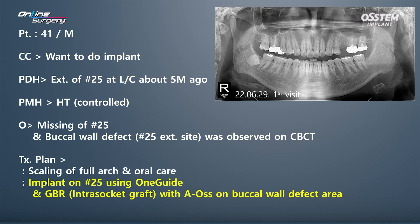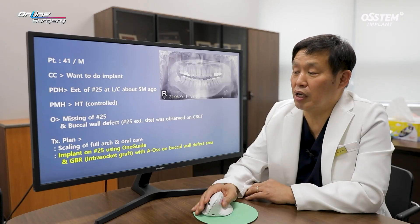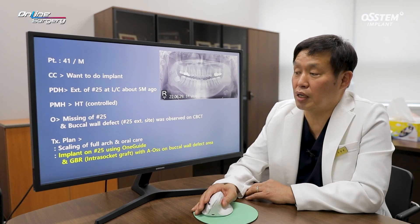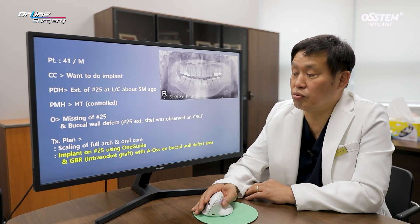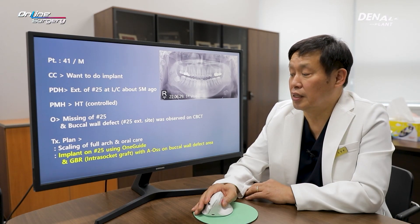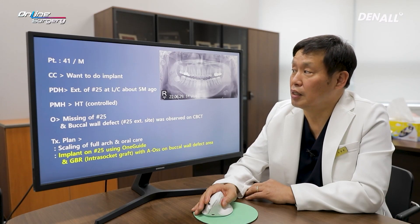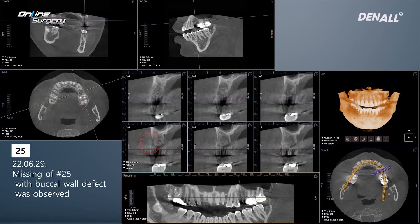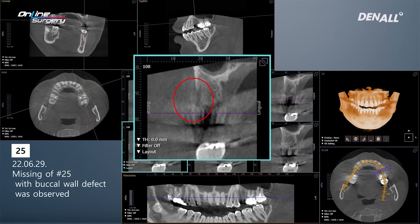When I looked at the CBCT at number 25, there is a buccal wall defect in the extraction socket. I provided overall oral care to the patient. After placing the implant, I planned to do an intra-socket graft. Within the extraction socket, there is a buccal wall defect, and using AOS, I planned to do GBR. Membrane was not included in the plan. On the CT at number 25 in the buccal area, there is bone defect, and on the palatal side, there is a bit more bone.